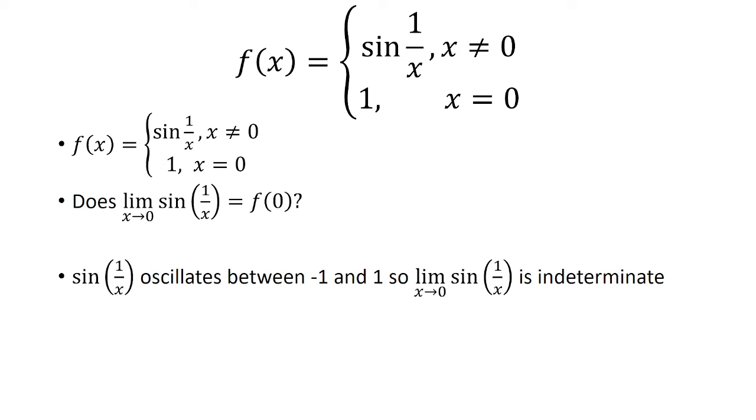We know that sine of 1 over x oscillates between negative 1 and 1. So the limit as x approaches 0 of sine of 1 over x is indeterminate. You can think of this as the same limit as x approaching infinity of sine of x.